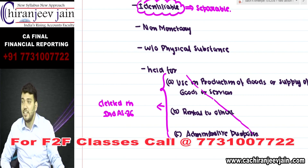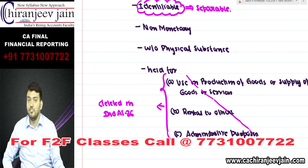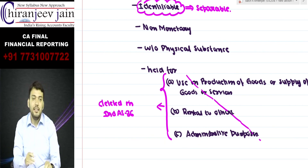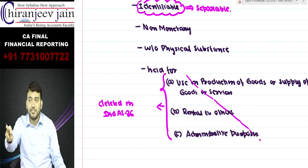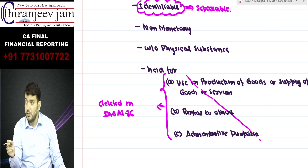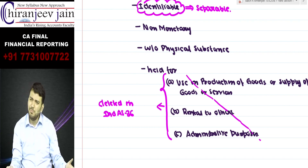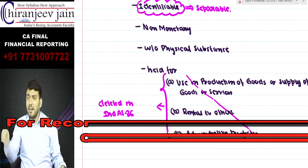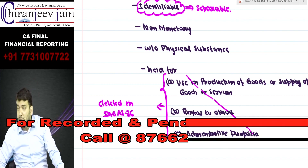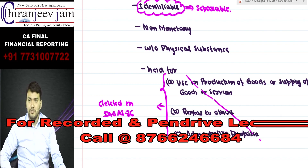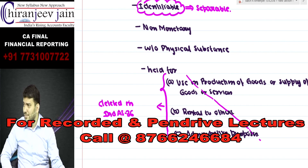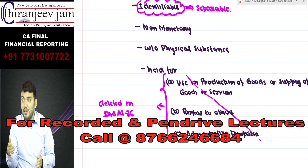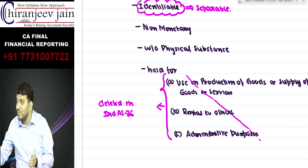So when these three conditions are satisfied, the asset will be known as an intangible asset. The three conditions are: identifiable, non-monetary, and without physical substance. As a CA Final student, you should not say an intangible asset is 'which cannot be seen, touched, or felt' - that is a 100% wrong definition. The correct definition is: identifiable, non-monetary, without physical substance.